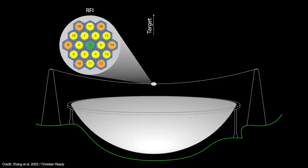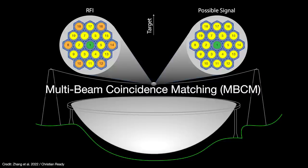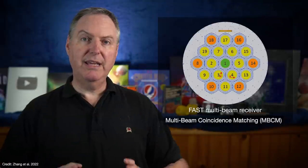A signal that reaches beam 1 and any of the outer beams is rejected as RFI. On the other hand, if a signal is detected in beam 1 but not in any of those outermost beams, well then it becomes a candidate for follow-up. This technique is called multi-beam coincidence matching, or MBCM. The advantage is that FAST can make both on and off-source observations simultaneously without ever having to move its receiver.